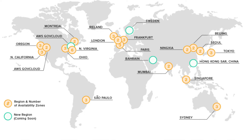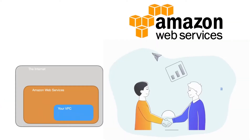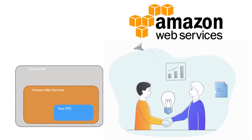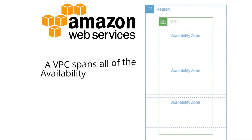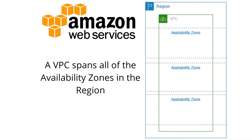A default VPC is created automatically by Amazon inside each region for your account, so you don't have to worry about it when starting with AWS services. A VPC spans all the availability zones in the region.